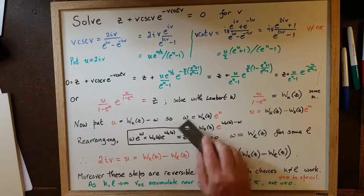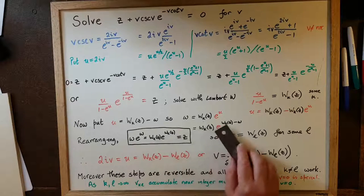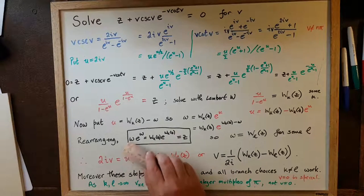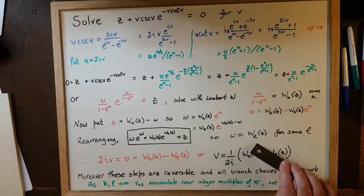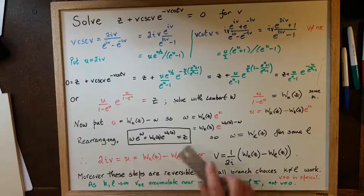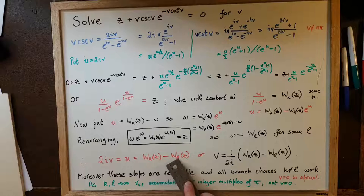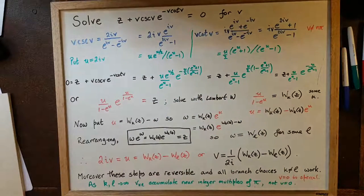This equation is much simpler because we can multiply both sides by e to the w, giving w e to the w equals W_k(z) times e to the W_k(z). But by the definition of the Lambert W function, W_k(z) times e to the W_k(z) is just z. So w e to the w equals z, meaning w must also be a value of the Lambert W function for some branch l. Therefore u equals W_k(z) minus W_l(z), and since u equals 2iv, we get v equals 1 over 2i times W_k(z) minus W_l(z).